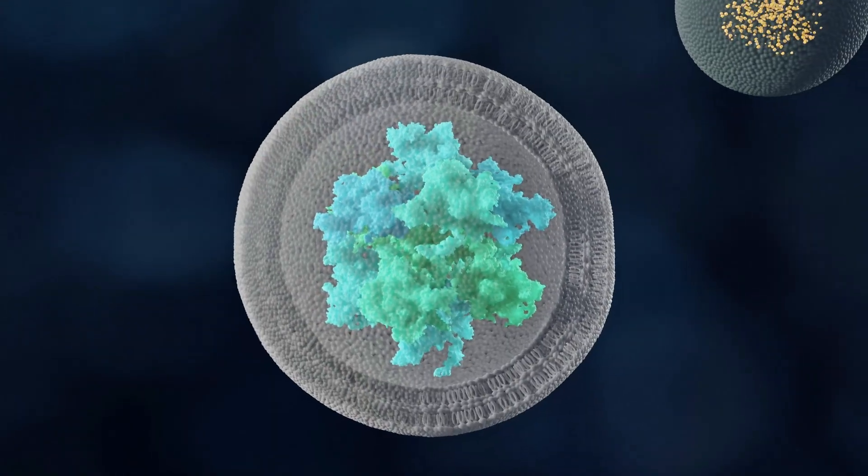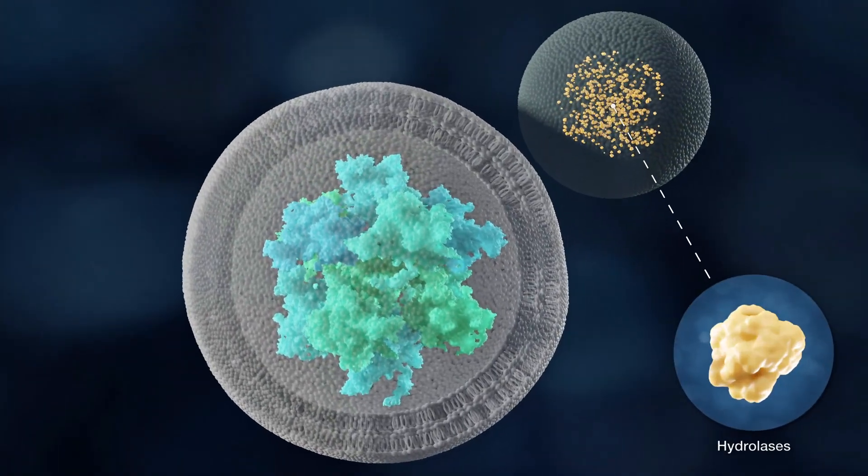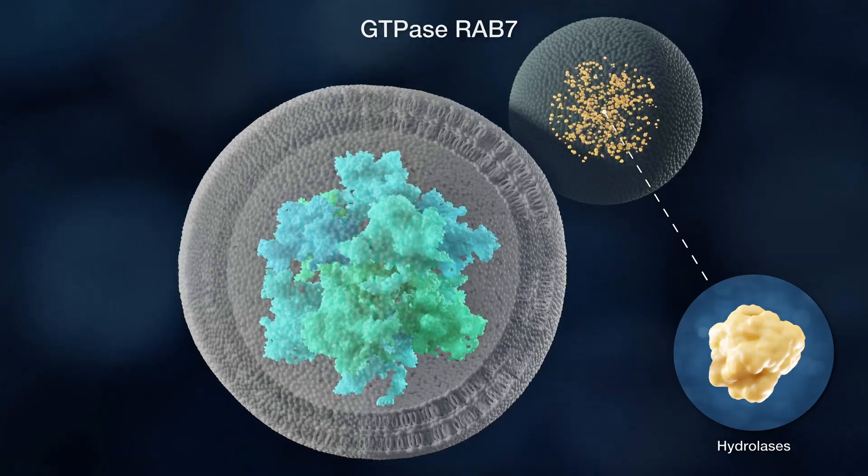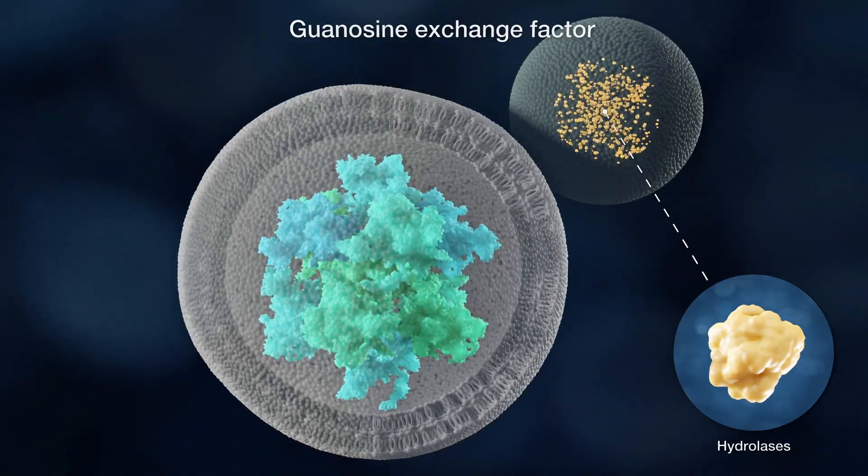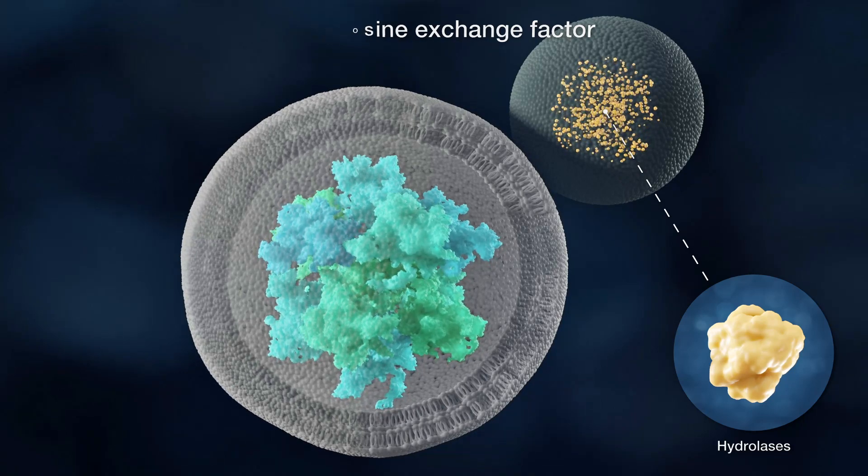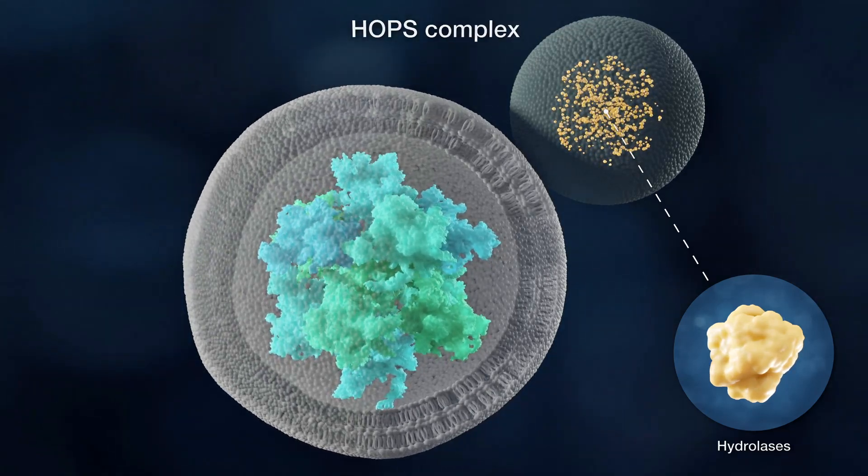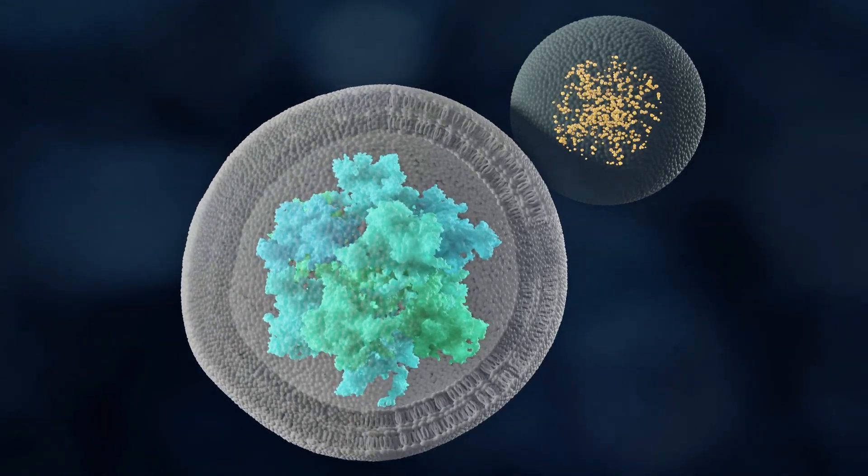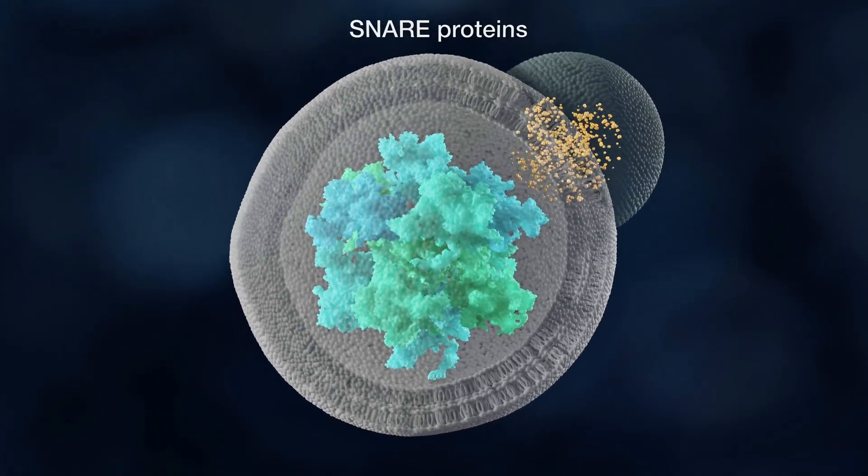Tethering of autophagosomes with these compartments of the endolysosomal system is coordinated by the small GTPase Rab7, its guanosine exchange factor, its downstream effector hops complex, and additional tethering factors. The subsequent fusion is mediated by SNARE proteins.